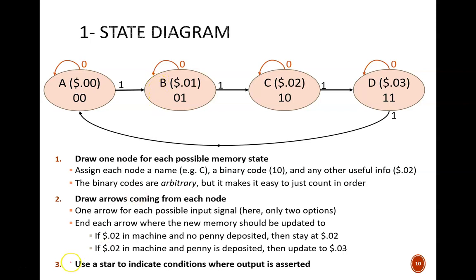The last thing to do, and the thing I forget most often, is to indicate any special output cases. In this design, the special output will be the signal that tells the gumball chute to open. This will only happen after a penny is added to a state of 3 cents. So, I place a star next to that particular arrow. The state diagram is now complete.